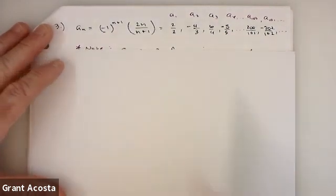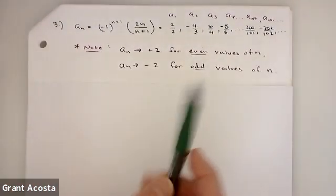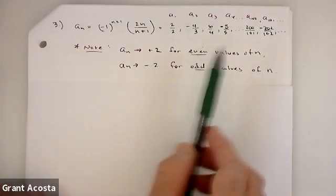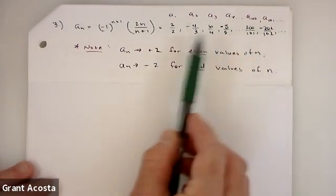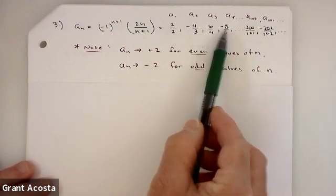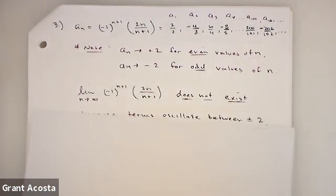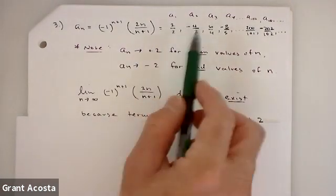So every even numbered term is going to come out to be a negative number and every odd term is going to come out to be a positive number. Okay, so it's going to just cause the numbers to oscillate.